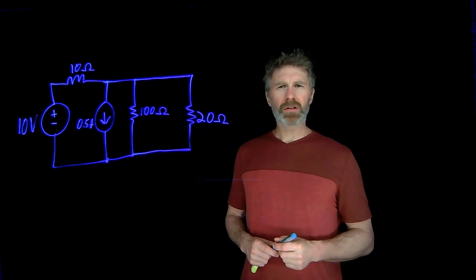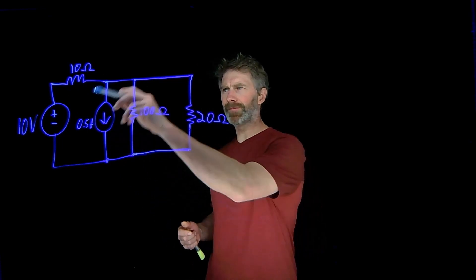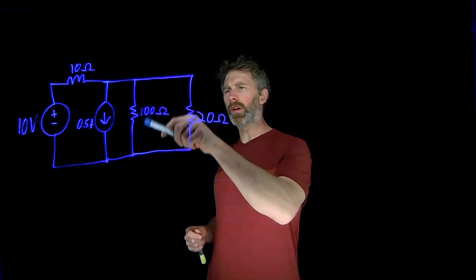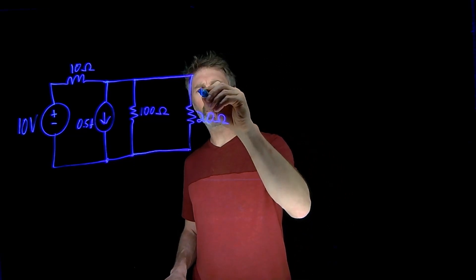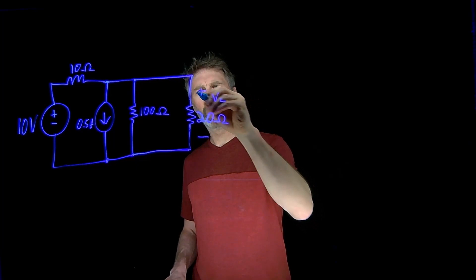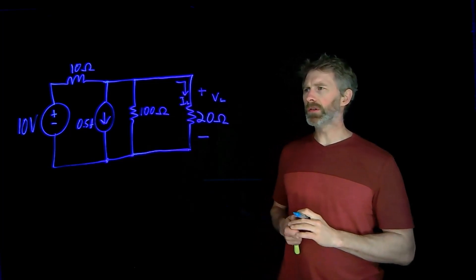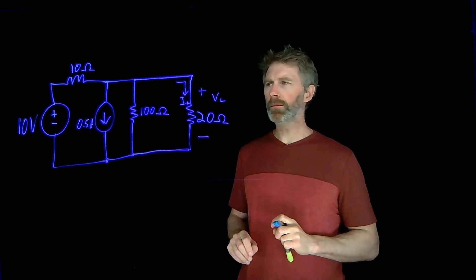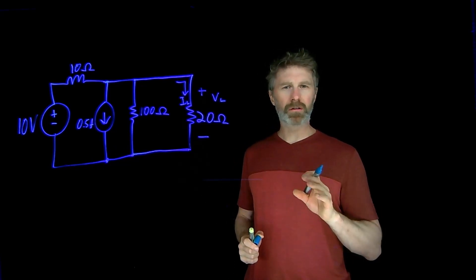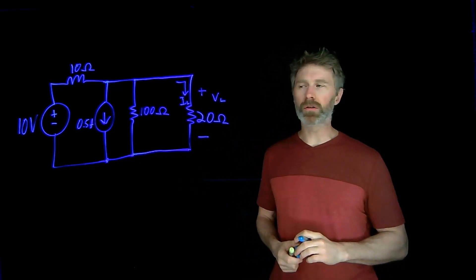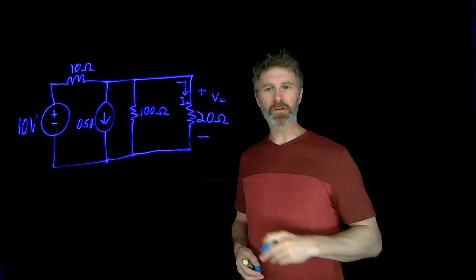The best way to understand the superposition principle is to look at an example. Here we have a circuit with a voltage source and a 10 ohm output impedance, and a 0.5 amp current source with 100 ohm resistance in parallel. Over here we have a 20 ohm load. What we're trying to figure out is the voltage across the load and the current through the load. We'll analyze the circuit with just the 10 volt source on, then with just the 0.5 amp current source on, and sum those two results together.